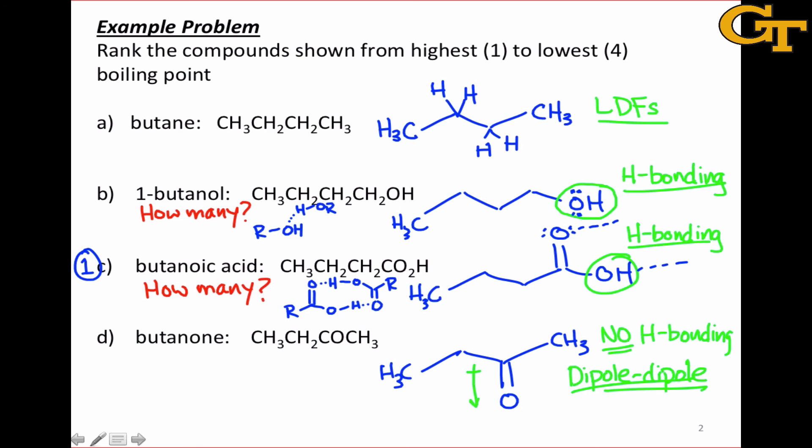Butanol comes in a close second because it can engage in hydrogen bonding. Butanone comes in at number three because of its dipole-dipole forces, and butane has the lowest boiling point of them all because it's only subject to London dispersion forces.